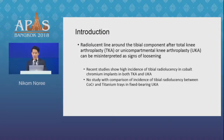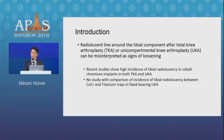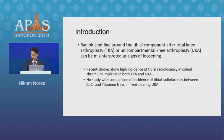The radiolucency line around the tibial component after total knee arthroplasty or unicompartmental knee arthroplasty may be misinterpreted as a sign of loosening. A recent study shows a high incidence of tibial radiolucency in cobalt chromium implants in both TKA and UKA. However, there is no study comparing the incidence of tibial radiolucency between cobalt chromium and titanium trays in fixed-bearing UKA.